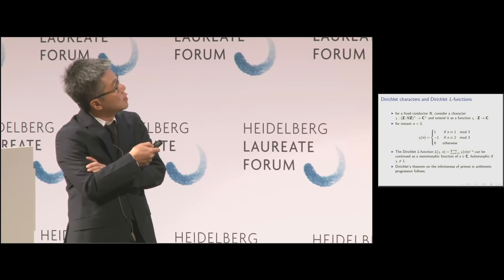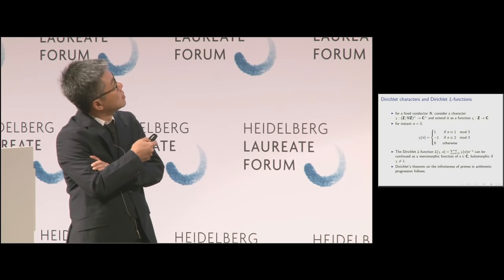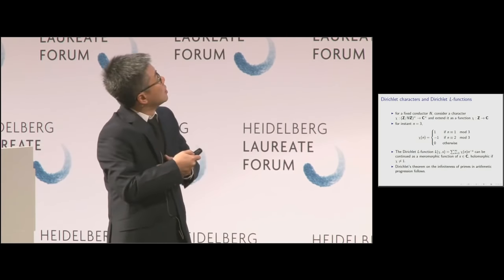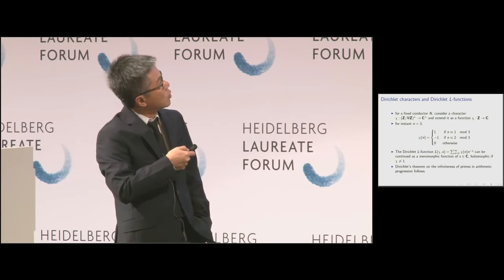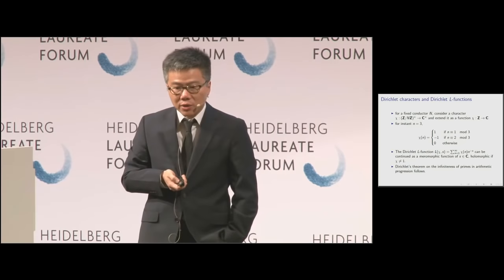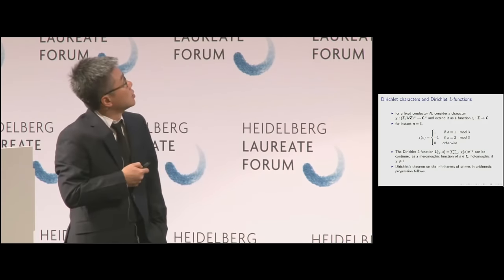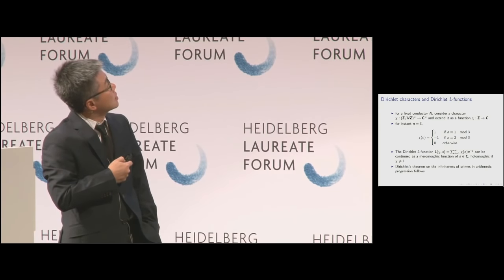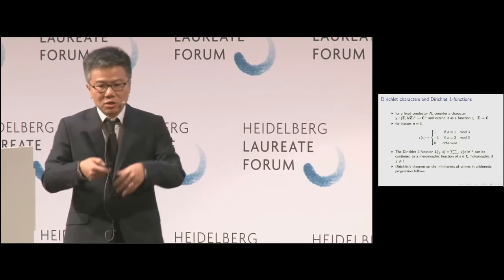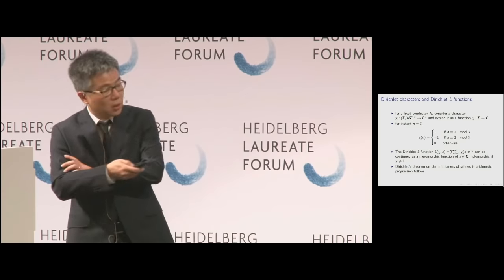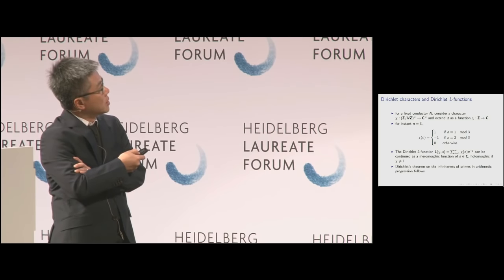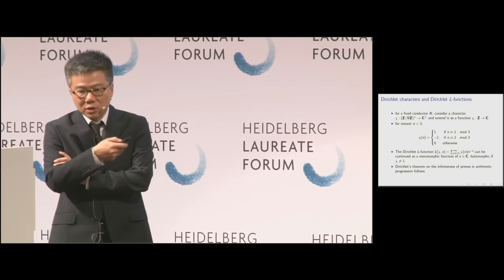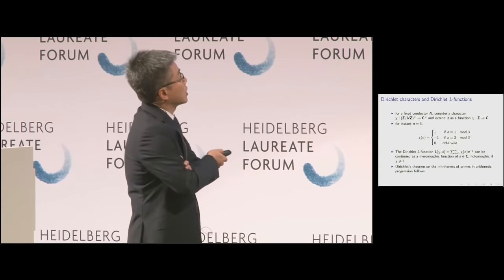You have the classes modulo 3 and the multiplicative group (Z/3Z)*. The character sends n to 1 when n is congruent to 1 mod 3, and to minus 1 when n is congruent to 2 mod 3. You extend this function from (Z/3Z)* to Z by setting it to zero where it's not defined. Then you form the Dirichlet series — completely analogous to the Riemann zeta function — but instead of 1, you put the character value (1, minus 1, or a root of unity) at each integer. Terms where N divides n are simply left out.